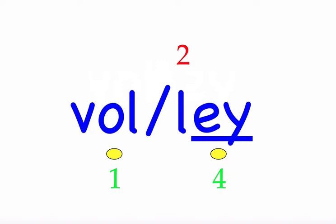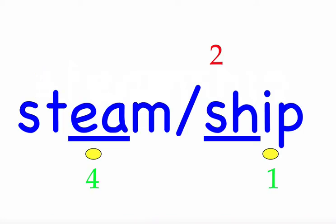The next word is 'steamship.' He was a captain of the steamship. First syllable 'steam' — four sounds, S-T-E-A-M. Second syllable 'ship' — three sounds, S-H-I-P. This is also a compound word. Mark the word. Steamship.